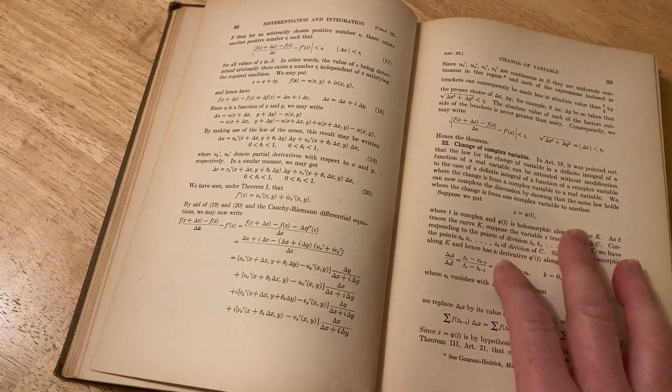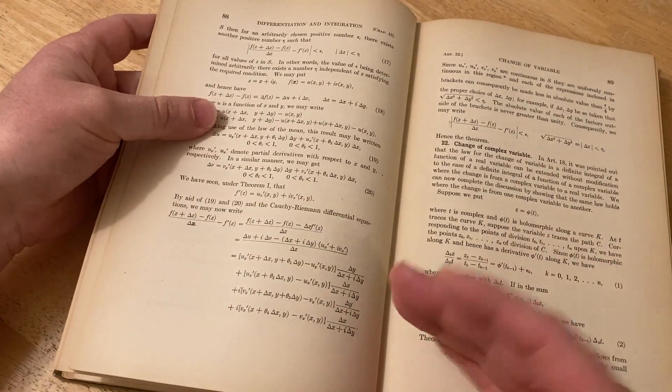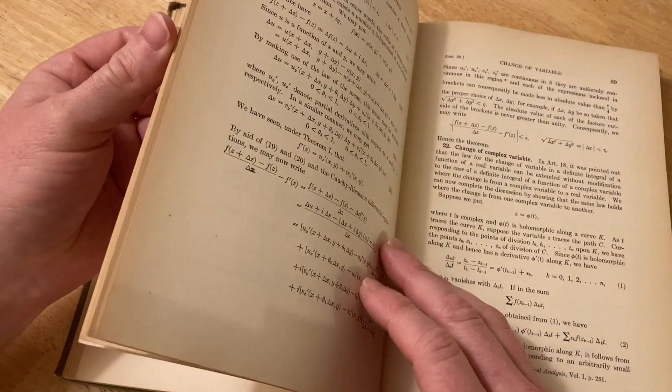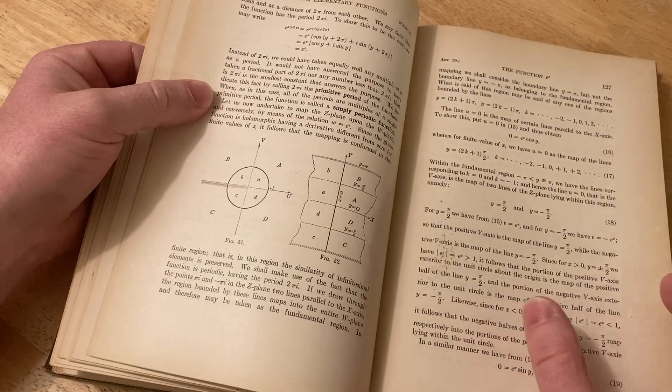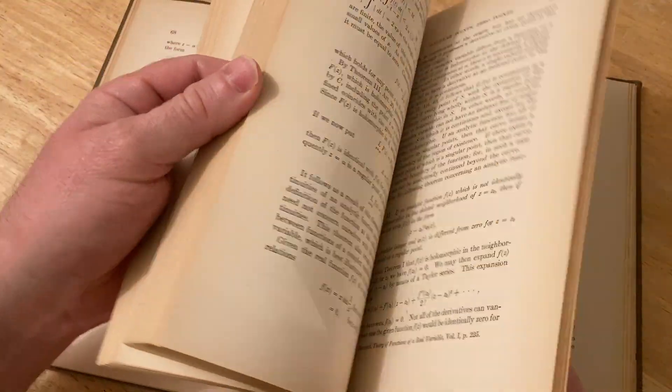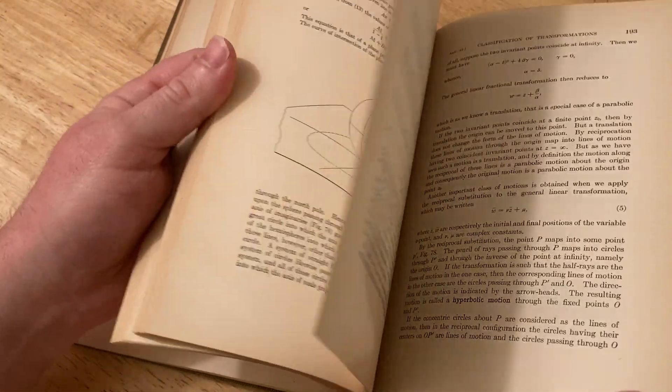The book by Brown and Churchill would be a better book for beginners than this one, or the book by Saf and Snyder. I'll try to leave some links in the description to this book if I can find it. It might be out of print, and to other good beginner books on complex variables.